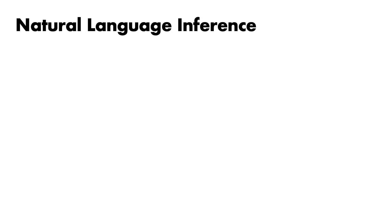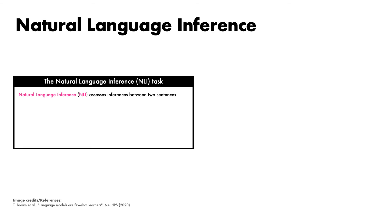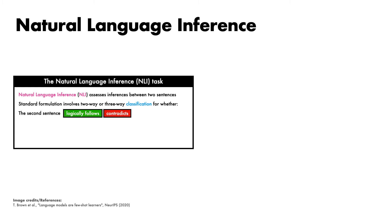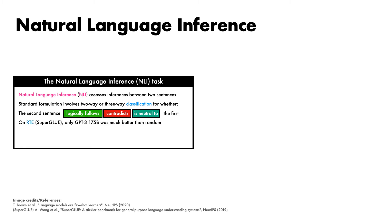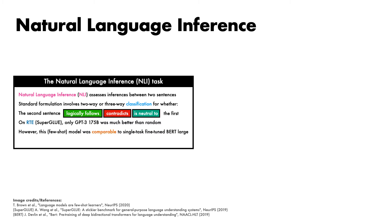The goal of natural language inference, or NLI, benchmarks is to assess the ability of models to infer relationships between two sentences. The standard formulation involves either two-way or three-way classification for whether the second sentence either logically follows, contradicts, or is neutral with respect to the first sentence. On the RTE component of the SuperGLUE benchmark we just looked at, only the largest GPT-3 model performed much better than random.